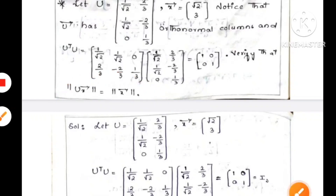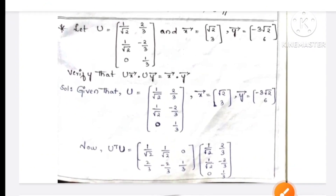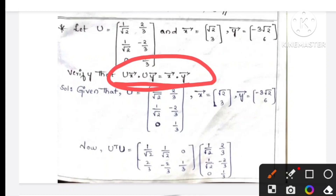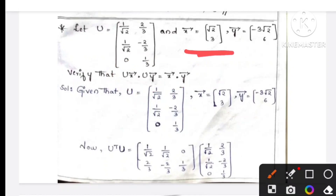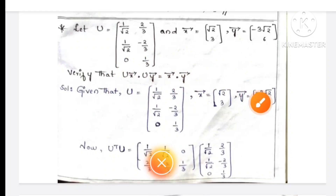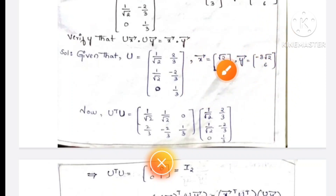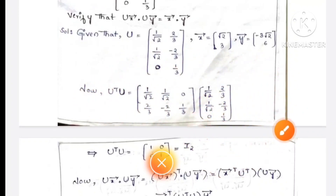Next, let U equal to a matrix, X equal to a matrix, and Y equal to a matrix, and verify the property. Given that U equals m, X equals m, Y equals m.